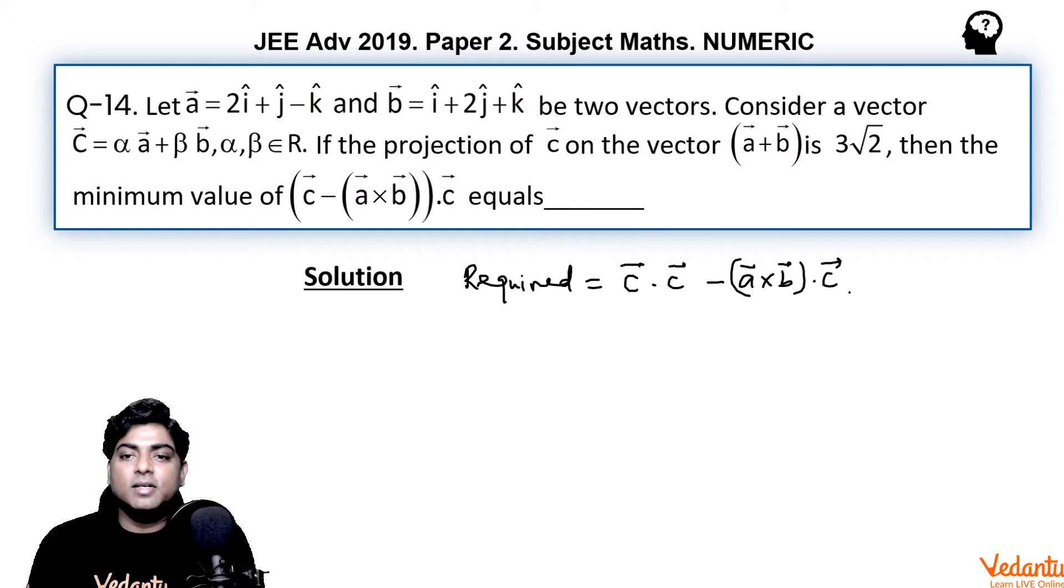And as we discussed, c is a vector lying in the plane of a and b, so a × b is a vector perpendicular to the plane of a and b. So a × b dot c would be 0 because a, b, c are coplanar vectors. So basically this becomes mod c squared minus 0. So we need to find the minimum possible value of this.